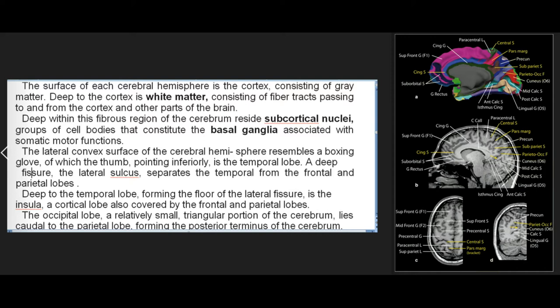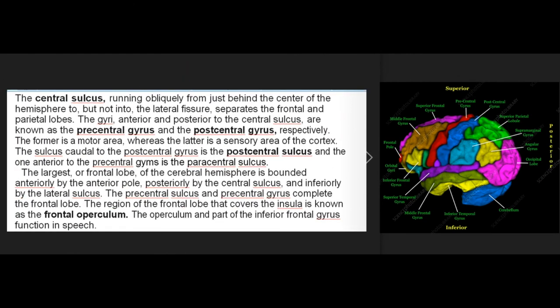The occipital lobe, a relatively small triangular portion of the cerebrum, lies caudal to the parietal lobe, forming the posterior terminus of the cerebrum. The central sulcus, running obliquely from just behind the center of the hemisphere to but not into the lateral fissure, separates the frontal and parietal lobes. The gyri anterior and posterior to the central sulcus are known as the precentral gyrus and the postcentral gyrus, respectively; the former is a motor area whereas the latter is a sensory area of the cortex.